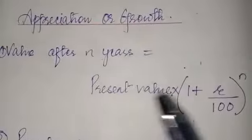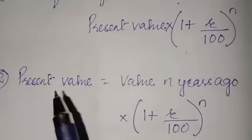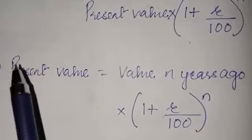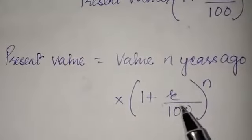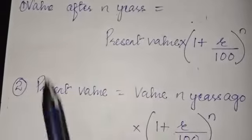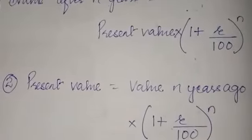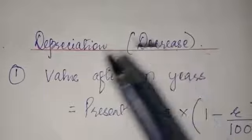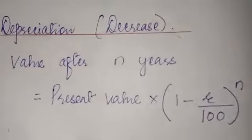For appreciation, it will be plus: present value into 1 plus r by 100 to the power n. If you have to find the present value and the value n years ago is given, then use this formula: present value is equal to value n years ago into 1 plus r by 100 to the power n. The two sides will be exchanged — when present value is on this side, in place of 'after' it will be 'ago'. In case of depreciation, meaning decrease, value after n years uses minus instead of plus — that is the only difference.